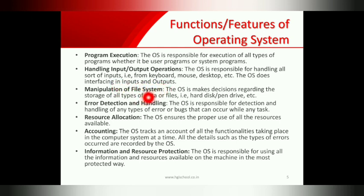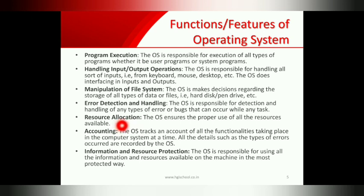The operating system manipulates all the files on the system, making decisions related to the storage of all types of data or files — on hard disk, pen drive, etc. It also handles error detecting and handling, detecting all types of errors and bugs that occur during any task. It allocates all the resources connected with the computer. Accounting keeps track of all functionalities taking place in the computer. Information and resource protection ensures that devices connected with the computer and all stored information are protected.